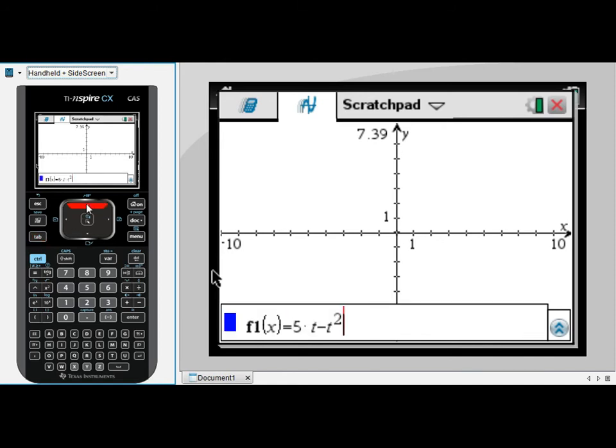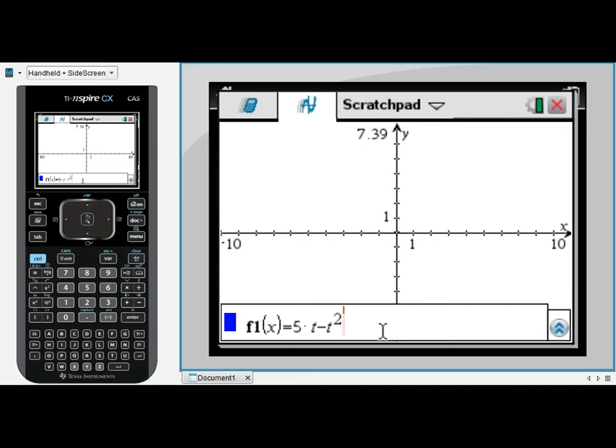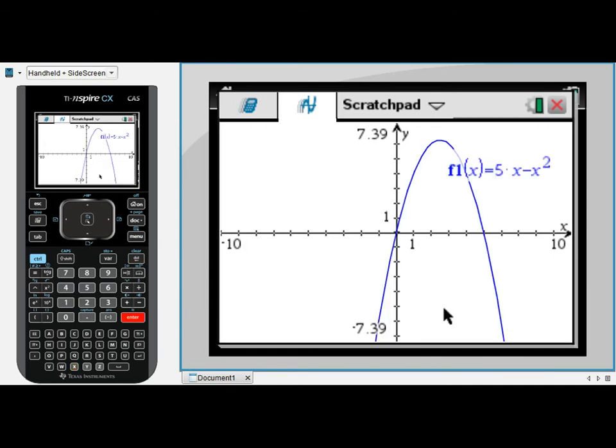I'm going to press tab or control G to open up my entry line again. I'm going to press up to go back to function 1 and edit this function now so that in place of T I have X's. Now when I press enter to graph this we should see a graph.